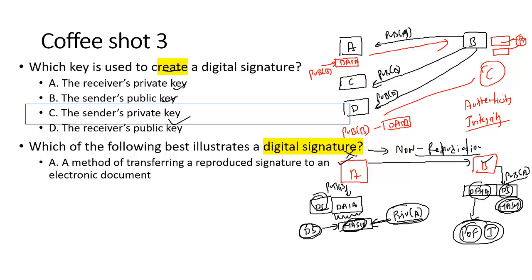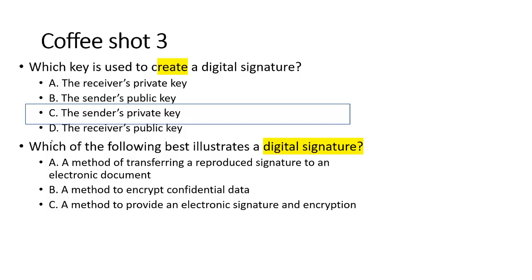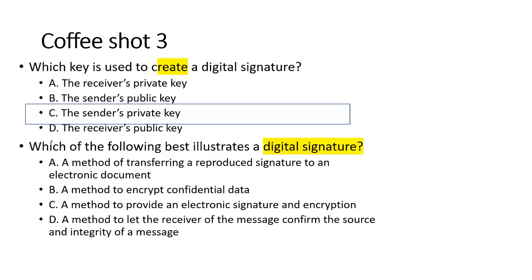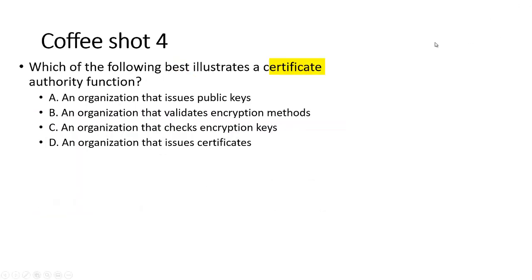Second question: Which of the following best illustrates a digital signature? A — a method of transferring a reproduced signature to an electronic document; B — a method to encrypt confidential data (that's confidentiality, not digital signature); C — a method to provide electronic signature; D — a method to let the receiver confirm the source and integrity of the message. The answer is D, because B decrypts the value with the sender's public key and verifies the hash, confirming the source and integrity.